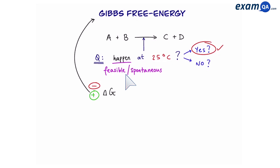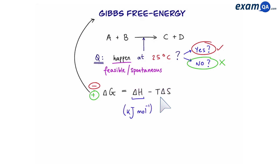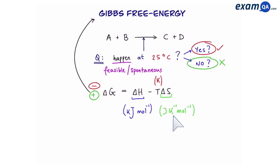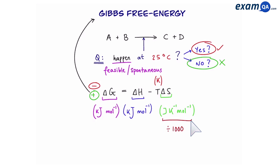And if delta G is positive, then the reaction won't happen. So to work out delta G, we're going to use the equation delta H minus T delta S. Make sure you're familiar with calculating entropy changes. The units for delta H are kilojoules per mole, and temperature is measured in Kelvin for this equation. Delta S stands for entropy and it's measured in joules per Kelvin per mole. Since the units for delta G are commonly kilojoules per mole, that means we have to divide delta S by a thousand to turn the joules into kilojoules.